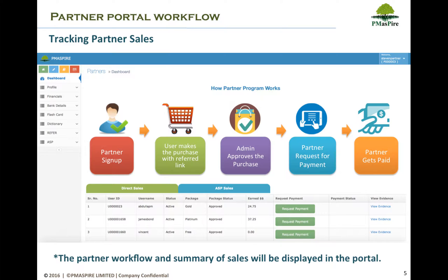Once a user registers using a Partner Reference, user details and package details show on the Partner Dashboard including Partner Earnings. To request invoice payment, the Partner can claim payment by clicking the button on the dashboard grid to go to Payment Request. The Partner first needs to fill in bank account details for payment transfer. The Partner can also track ASP sales by clicking the ASP Sales button.